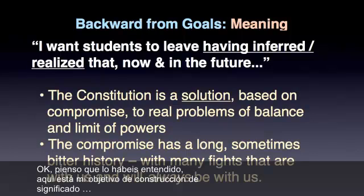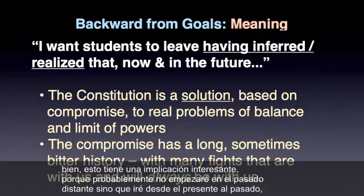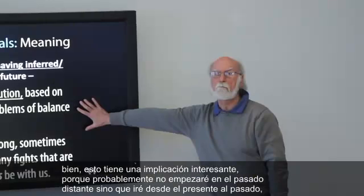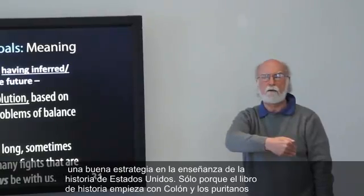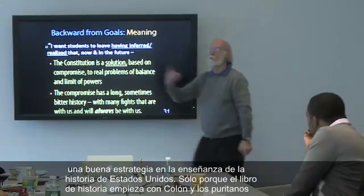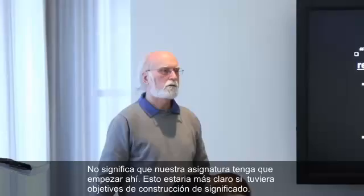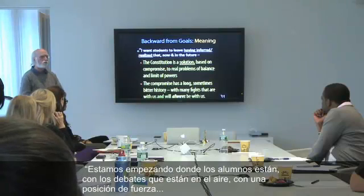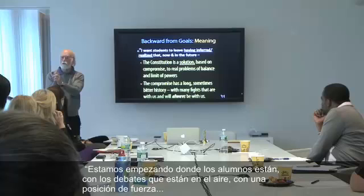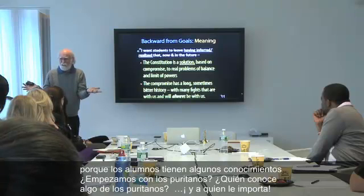That has an interesting implication: I probably won't start in the distant past. I might go from the present to the past a fair amount in my teaching of U.S. history. Just because the book starts with Columbus and the Puritans doesn't mean our course should start there. This would immediately be clear if you were clear on these meaning goals. We're beginning with where the students are, with the debate that's in the air — from a position of strength because the students have some knowledge. You start with the Puritans — who knows anything about the Puritans and who cares?